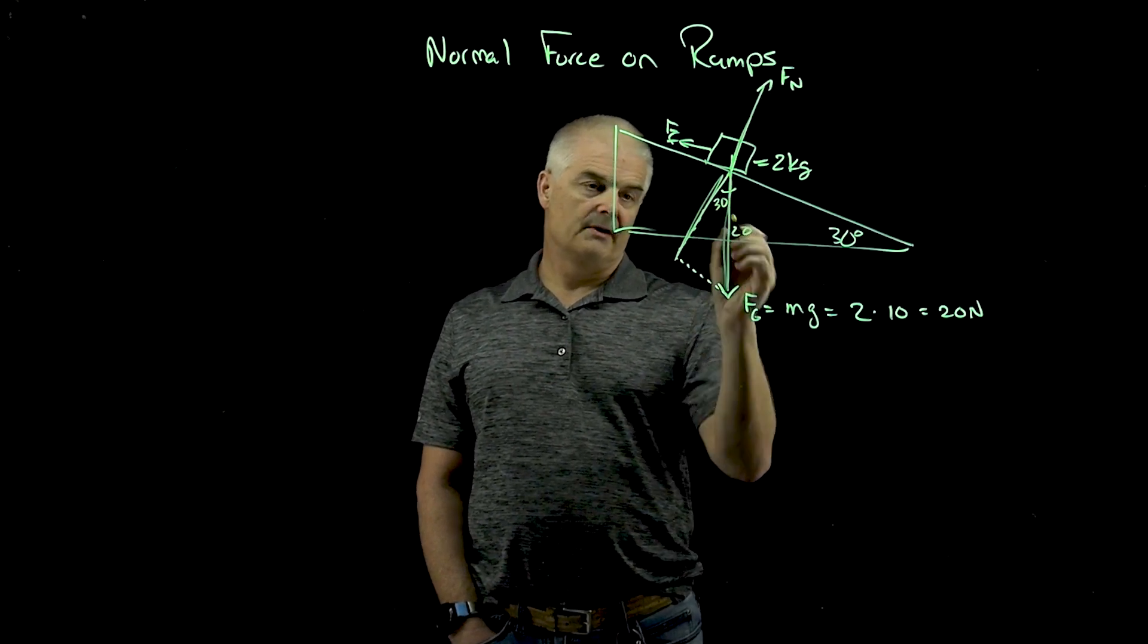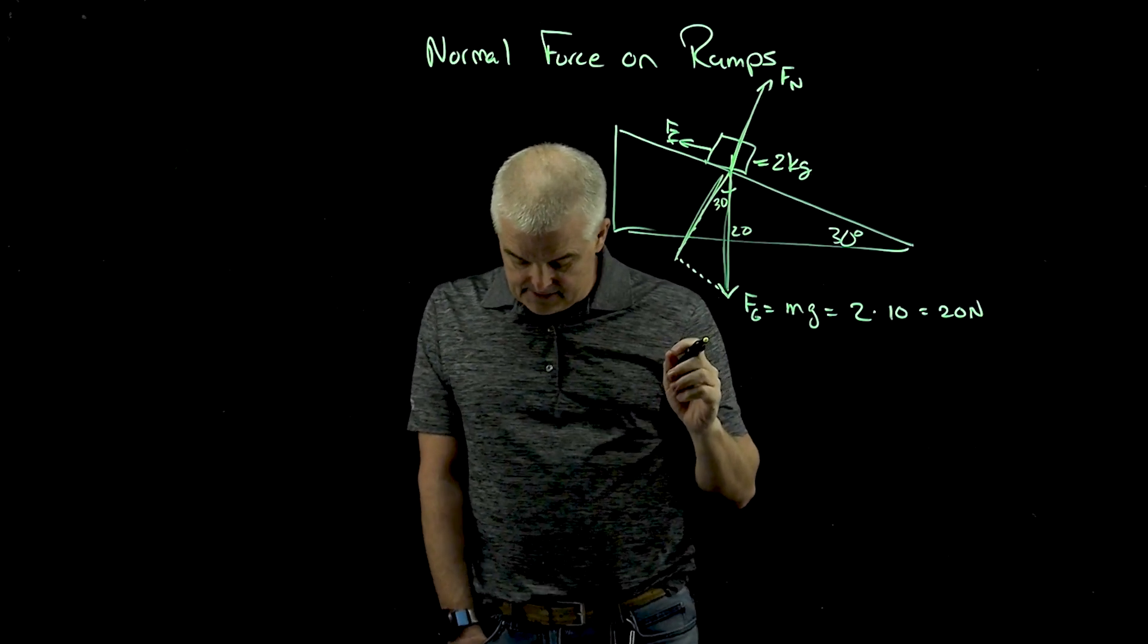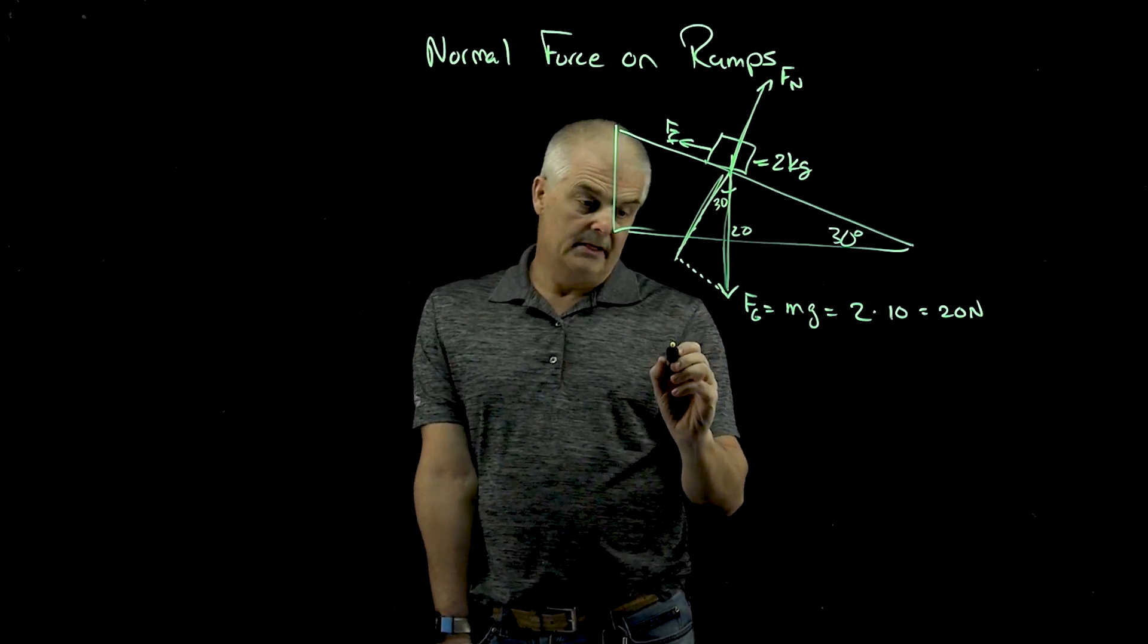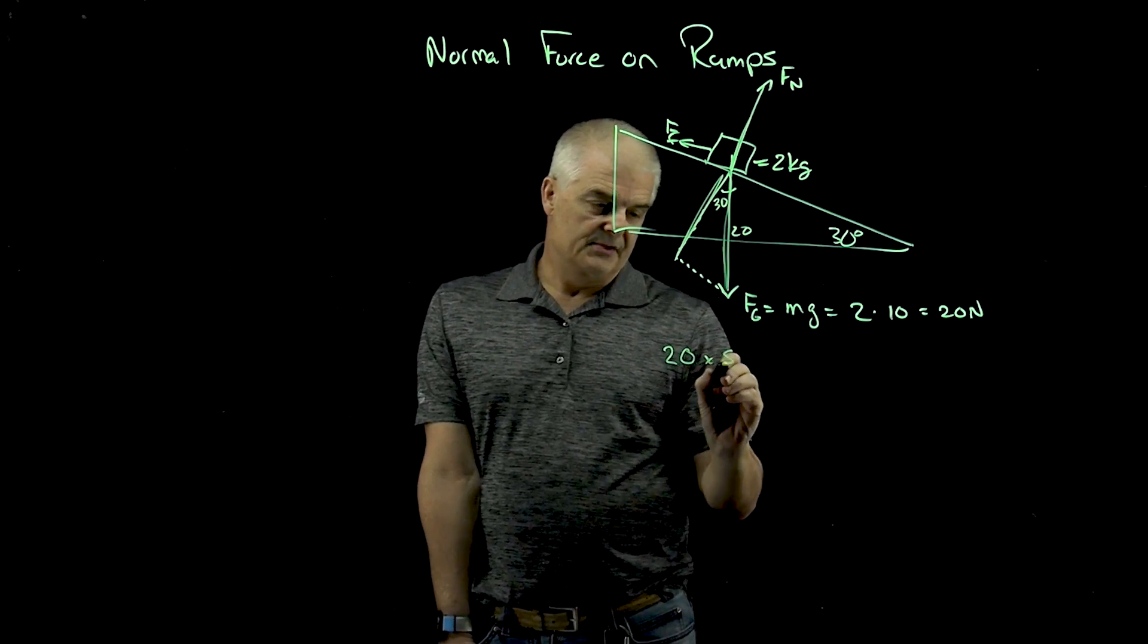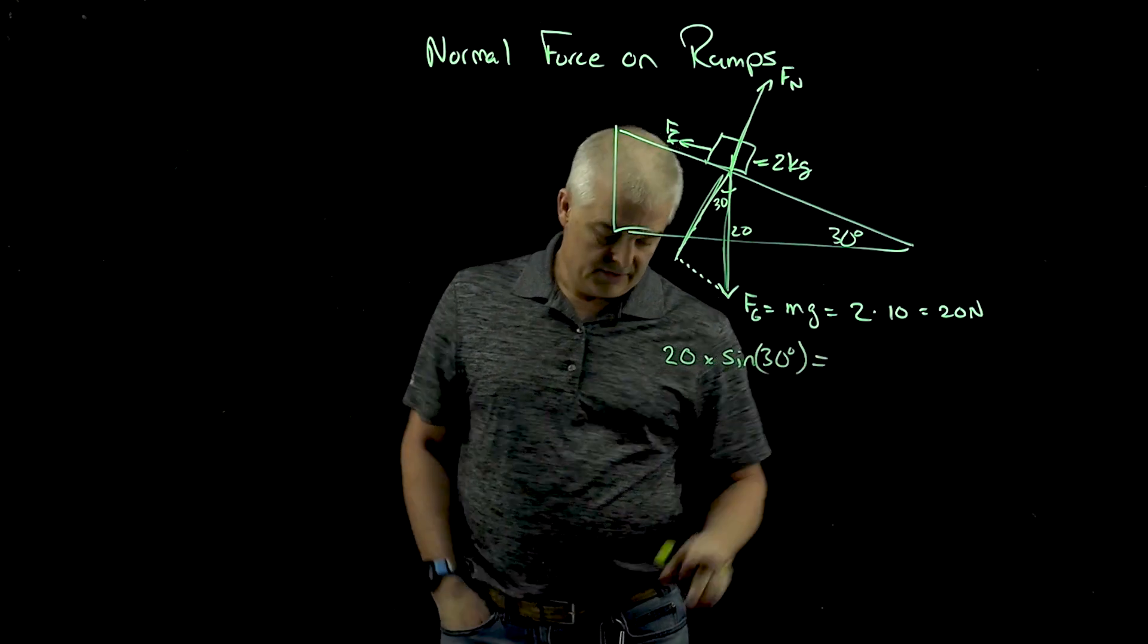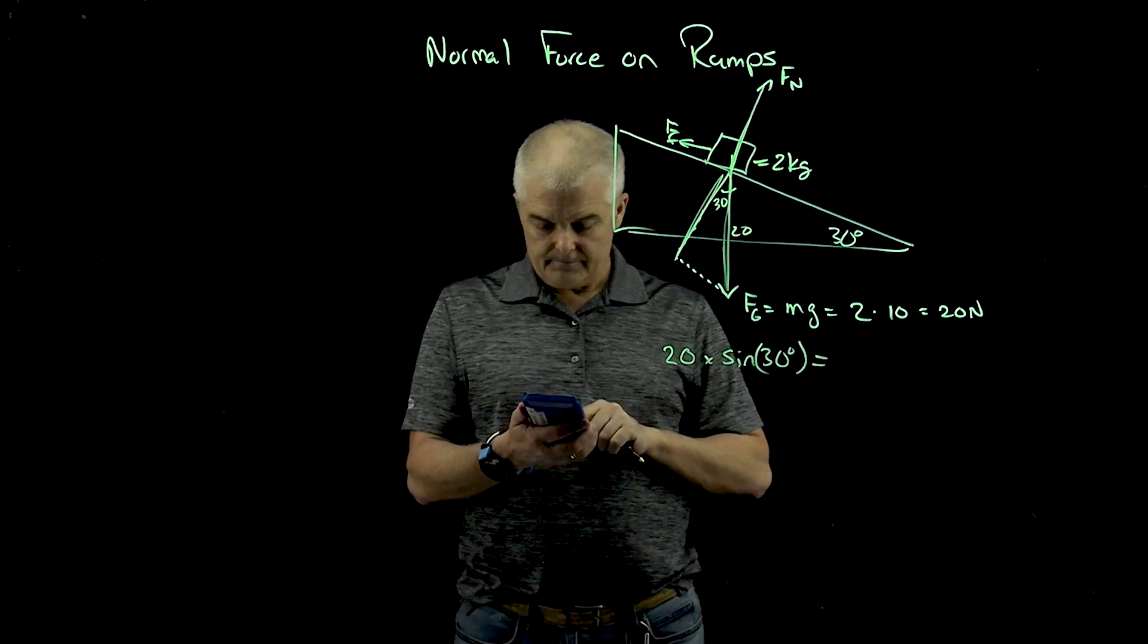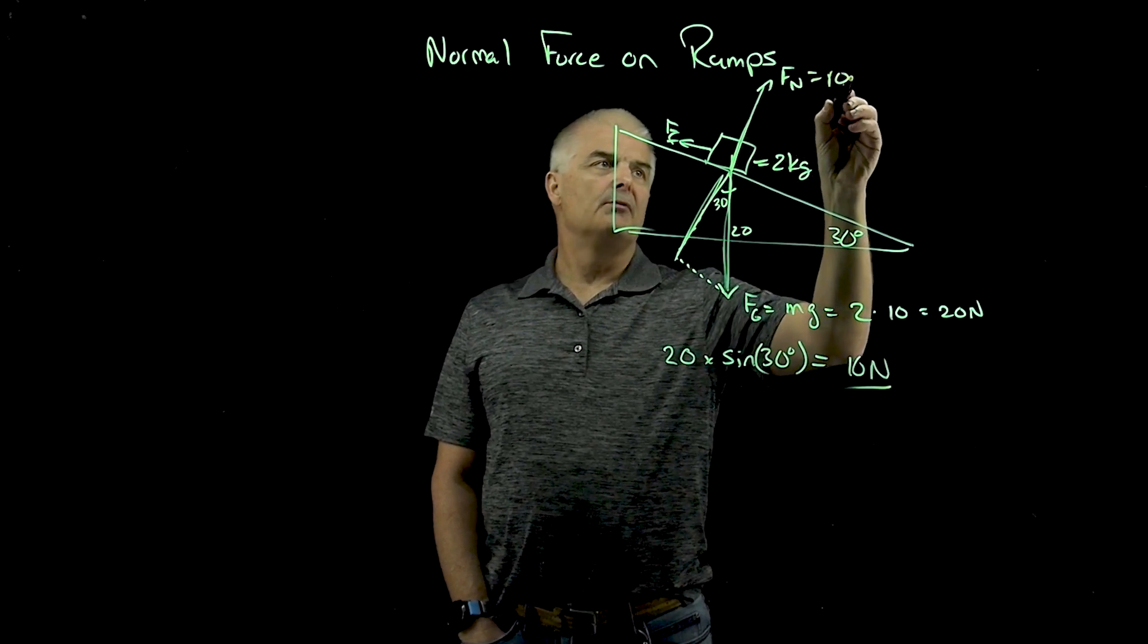This hypotenuse is 20, you've got a 30 degree angle. So you're going to say that it's 20 newtons times the sine of 30 degrees in this example, which equals 10. So the normal force in this problem would be 10 newtons.